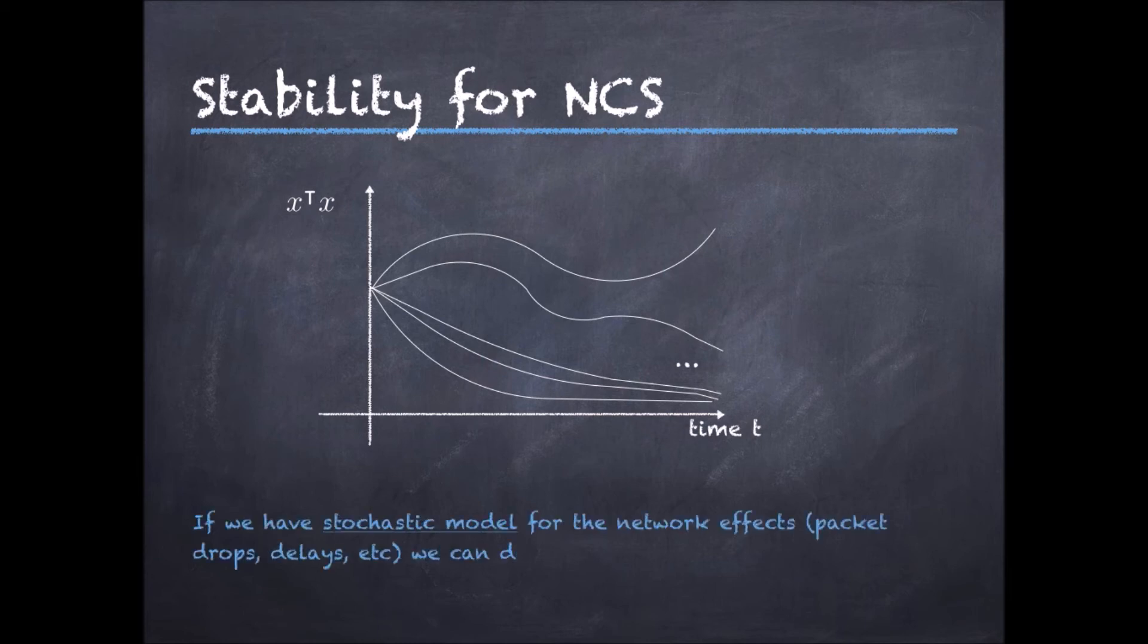However, if we have a stochastic model for delays and packet drops, we can define a stability concept called mean square stability, which can be explained as follows. Say that we fix a given time t1, and from all the possible realizations of delays and packet drops, we compute the expected value of this quadratic function of the state at this time t1. Now we can do this for every time t, and if this expected value converges to zero, we say that the system is mean square stable.